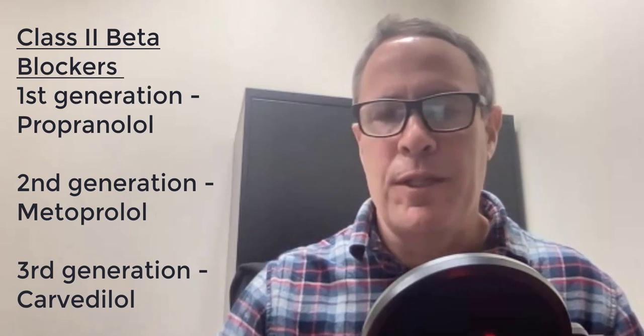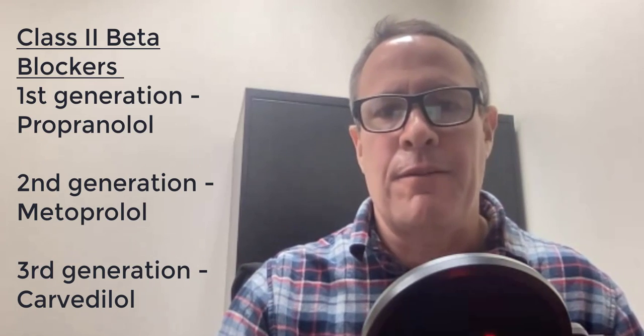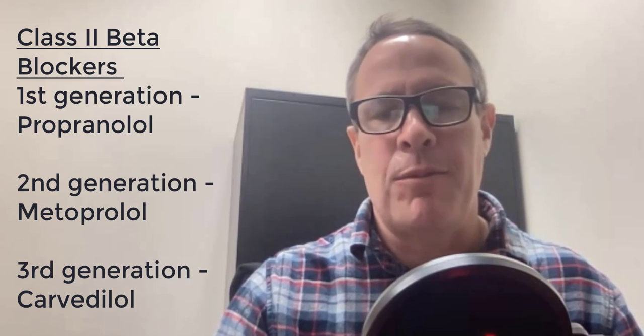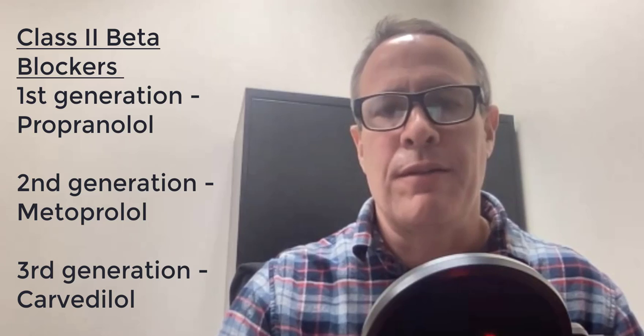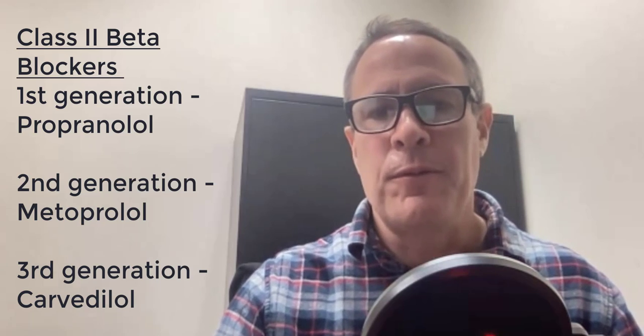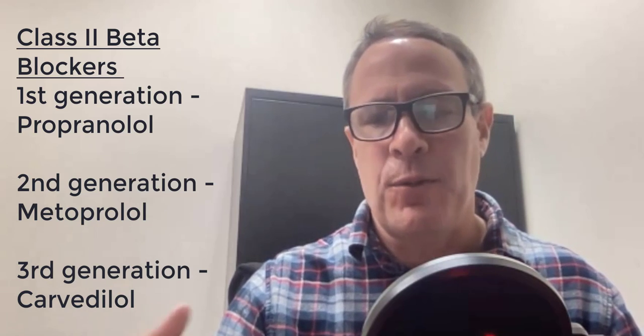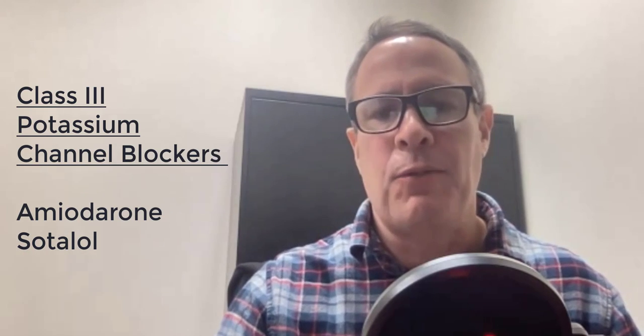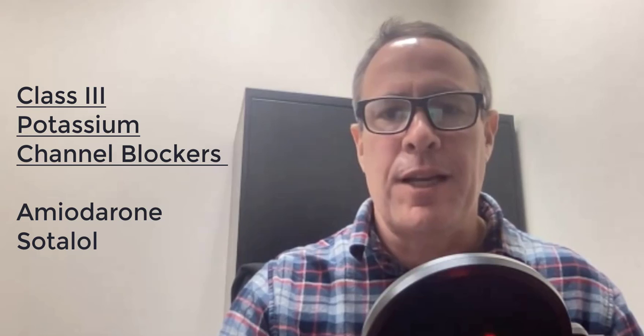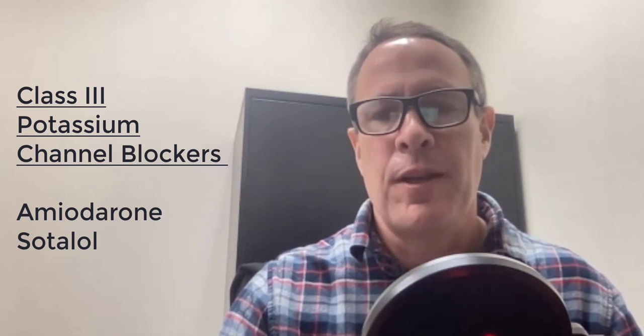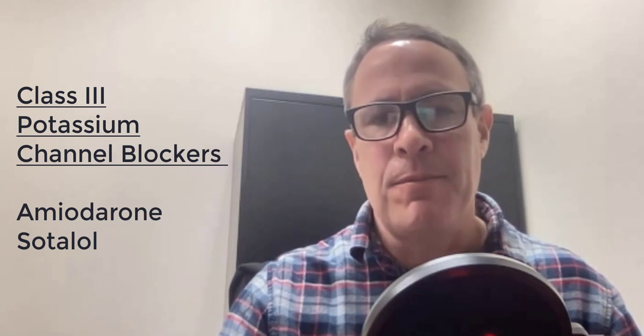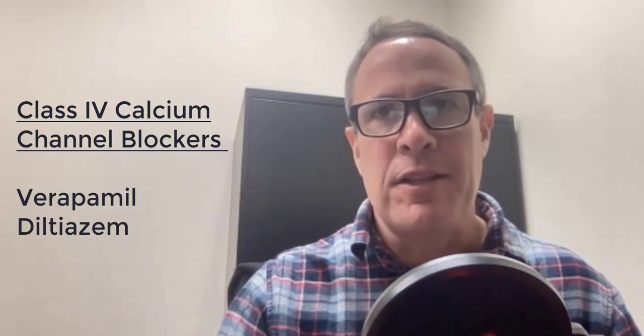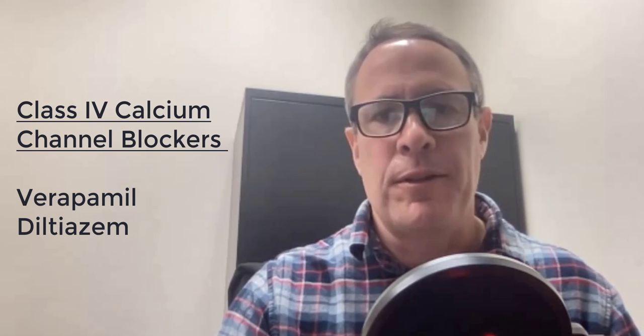Then we have Class 2, which is the beta blockers. We can have the first gens, which are like propranolol, second gen metoprolol, and third gen carvedilol. We move down to Class 3, which is amiodarone, and then Class 4 would be the verapamil and diltiazem, so the amiodarone is going to be a potassium blocking, and then the calcium channel blockers are going to be the verapamil and diltiazem.